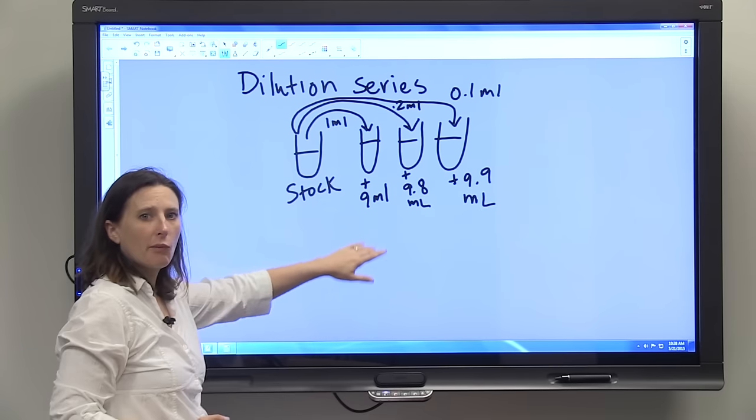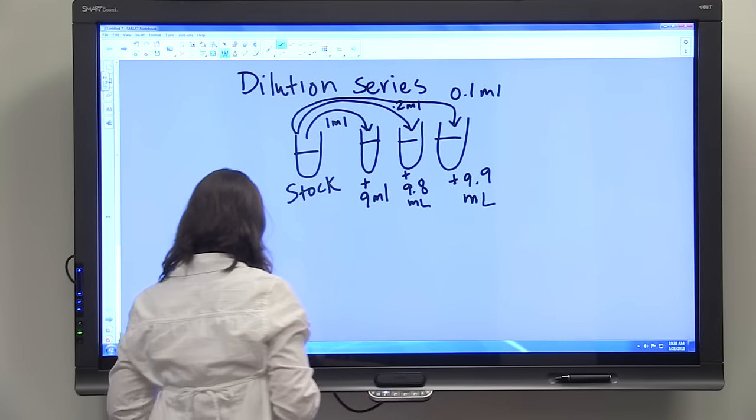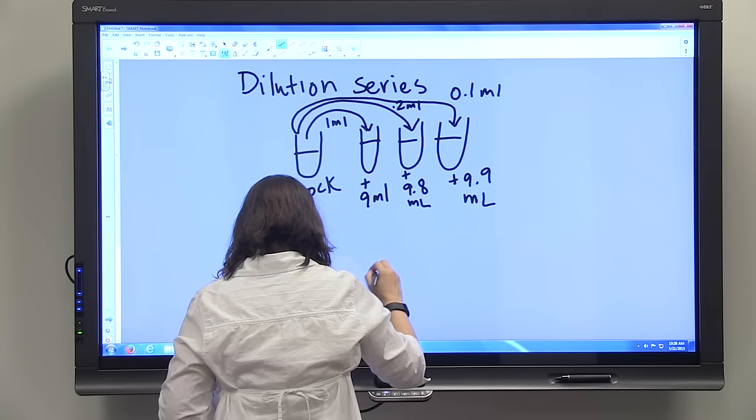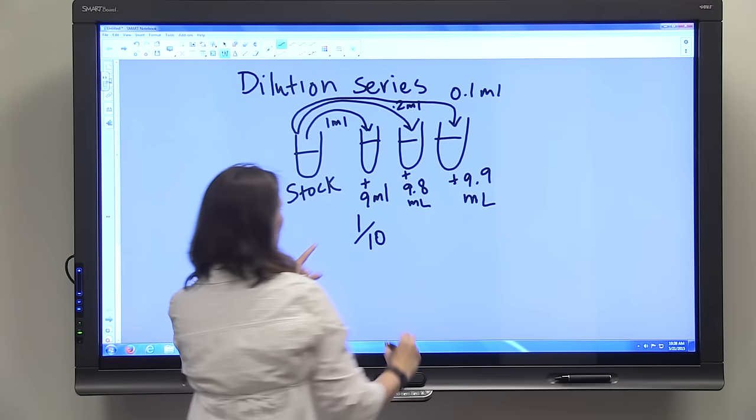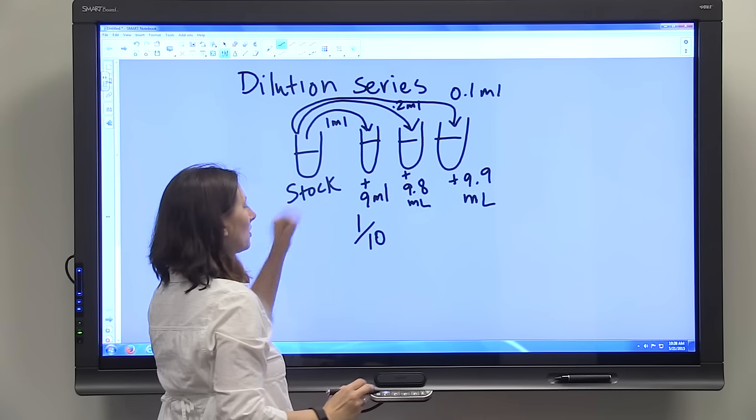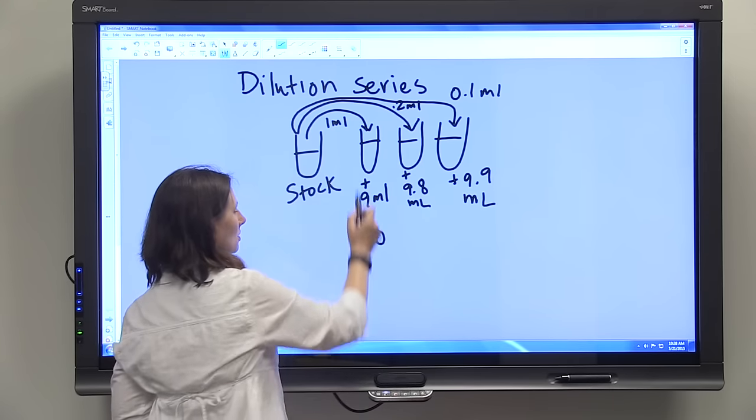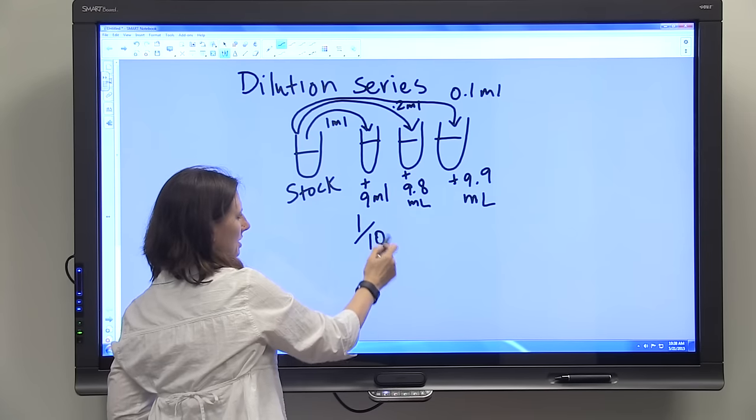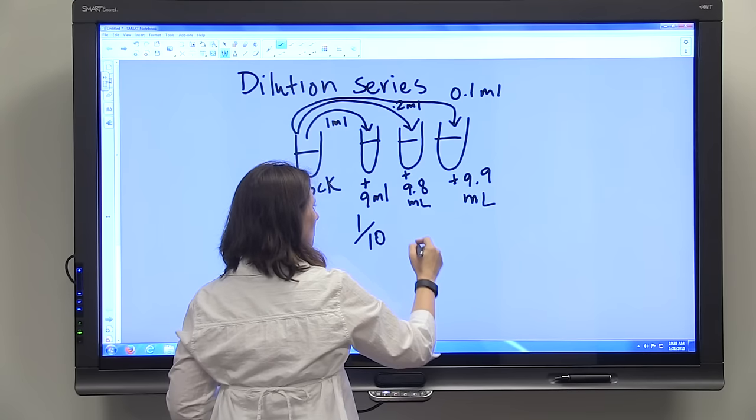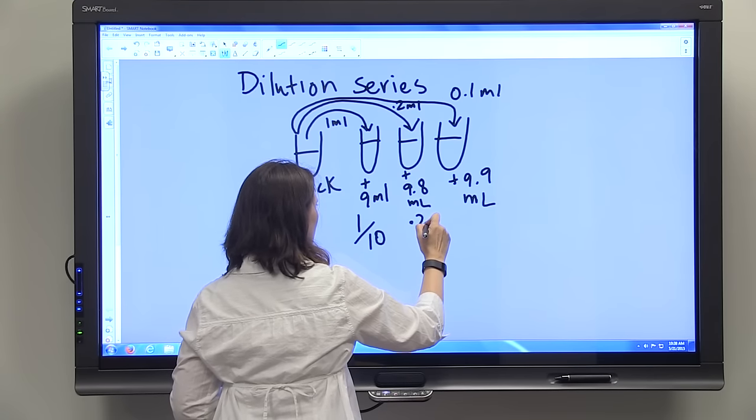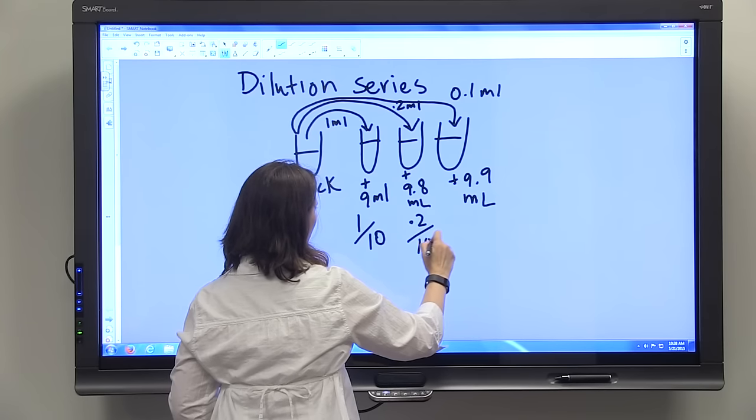So let's take a look at what doing that has done to our concentrations. We're going to have one tenth of our stock concentration because it's 1 ml in 10 ml's total. In the second test tube we have 0.2 ml's out of 10 ml's total.